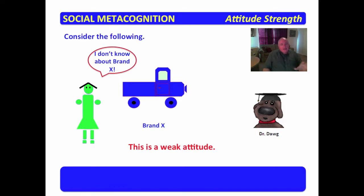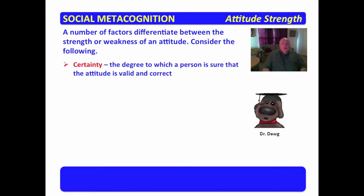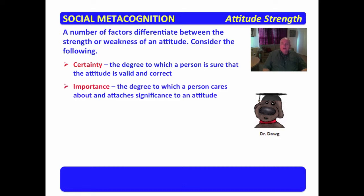We might say that the opinion they have of brand X pickups, being either strong or weak, can be known as attitude strength. A number of factors differentiate between the strength or weakness of an attitude. Certainty is the degree to which a person is sure that the attitude is valid and correct.